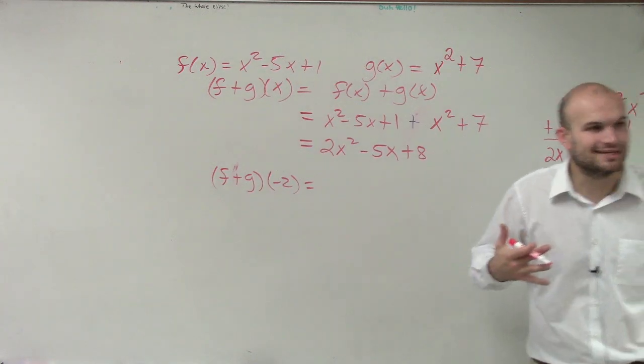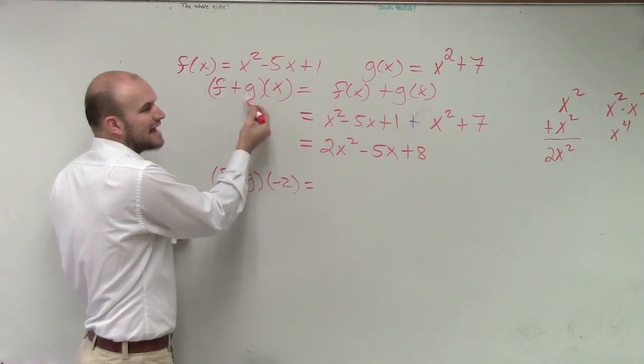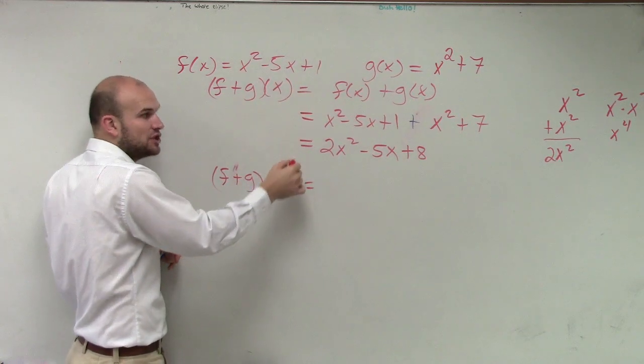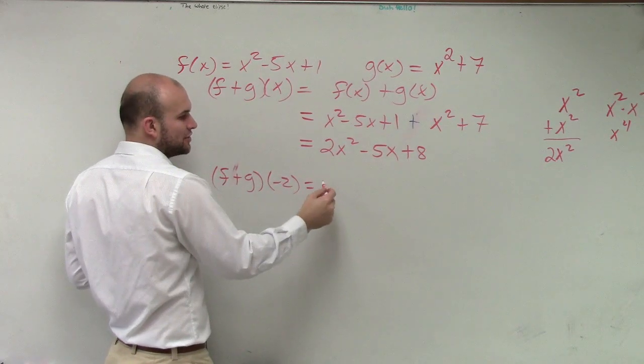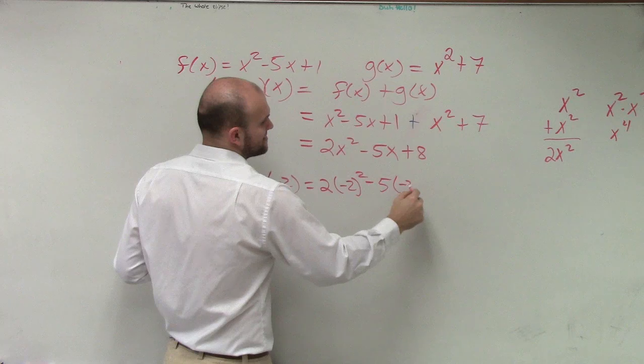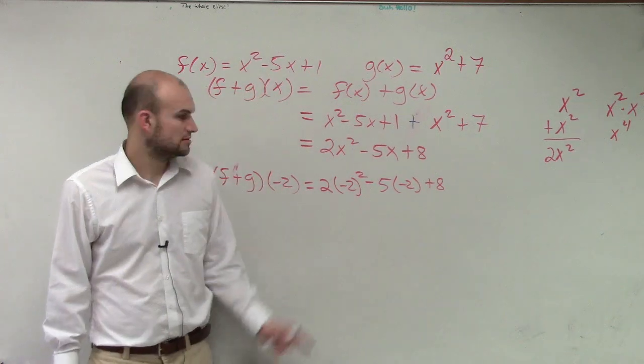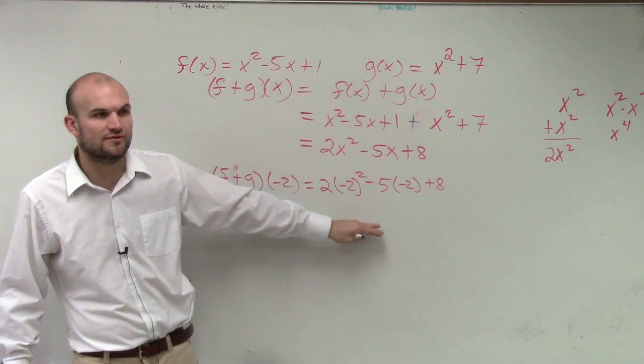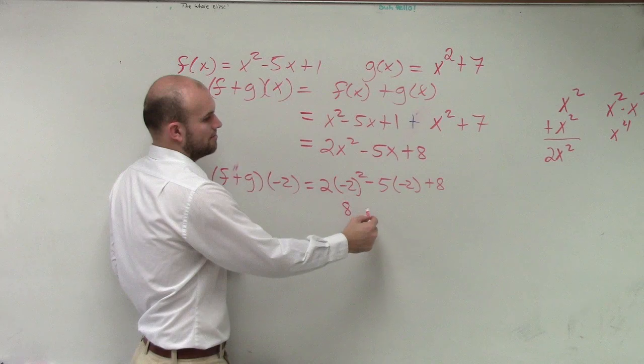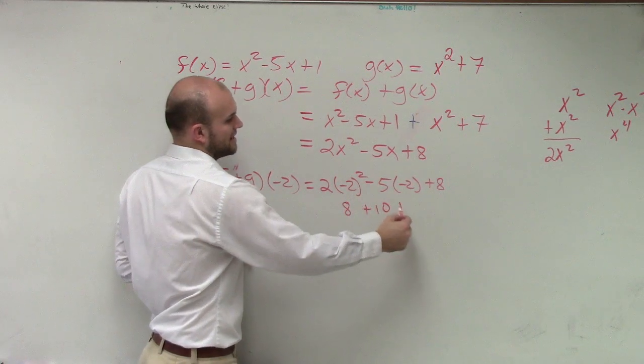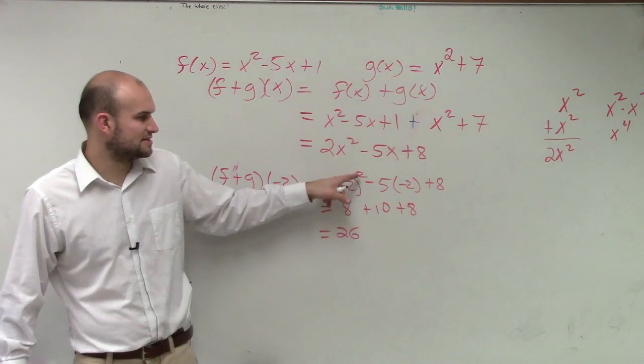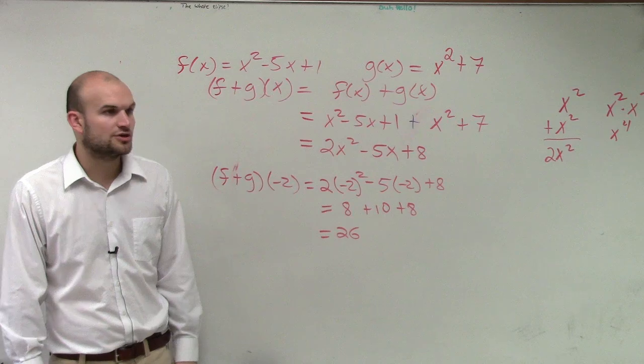However, ladies and gentlemen, they're not asking us to evaluate for x. They're asking to do f + g of negative 2. So once we add them, what we need to do is put the negative 2 in for x. So it's 2(-2)² - 5(-2) + 8. Therefore, -2 squared is 4, 4 × 2 is 8. -5 × -2 is positive 10 + 8. So therefore, my final answer is 26.